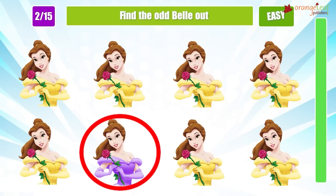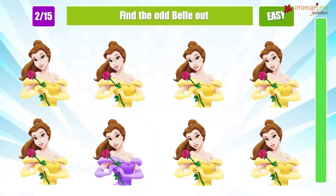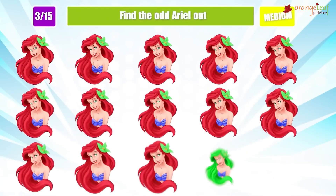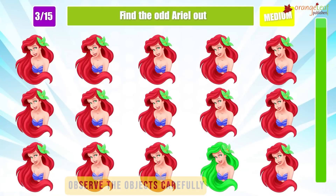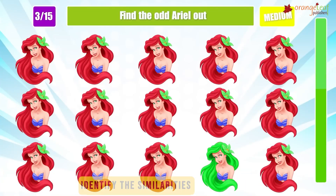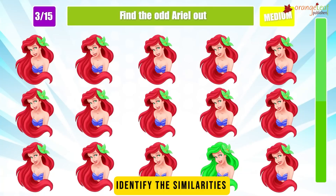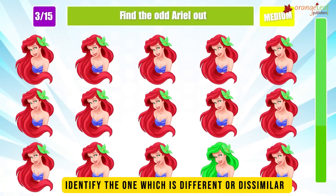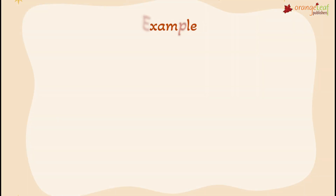To identify the odd one out, follow the following pattern: observe the objects carefully, describe the objects, identify the similarities, identify the one which is different or dissimilar, and identify the other.